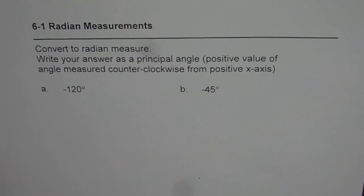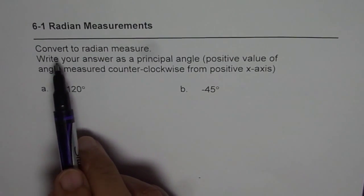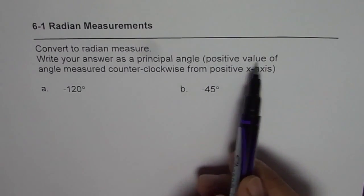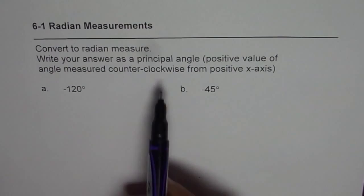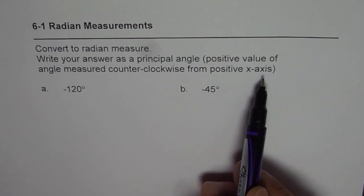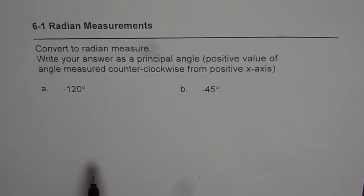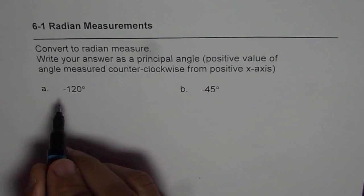I'm Anil Kumar and in this video we will understand how to convert degrees to radians. The question says: convert to radian measure and write your answer as a principal angle — a positive value of angle measured counterclockwise from the positive x-axis. We have to report the angle in radians with a positive sign. Pause the video, answer, and then check with my solution.